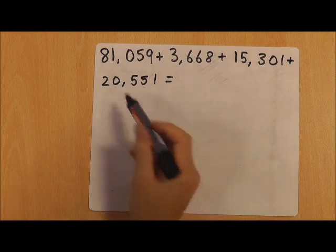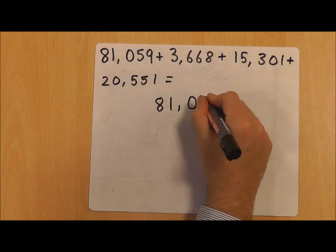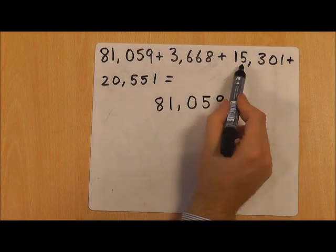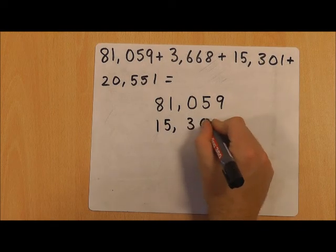I'm going to put 81,059 into my column. I'm then going to put 15,301, so I need to make sure that I line up each place value column.